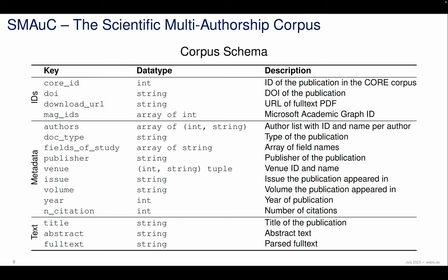This is what the dataset itself looks like. We have 16 keys, of which four are IDs — four CORE, DOI, download URL, and the Academic Graph ID. Then we have the metadata of the publication itself: authors, issues, year, etc., and then title, abstract, and full text.